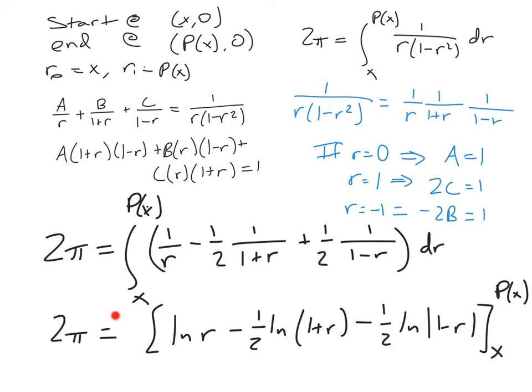Integrating, we get a bunch of logarithms, and we're going to have to plug in our two endpoints, and this will be equal to 2π. We're hoping it all simplifies nicely as we work towards finding out what our Poincaré map is.